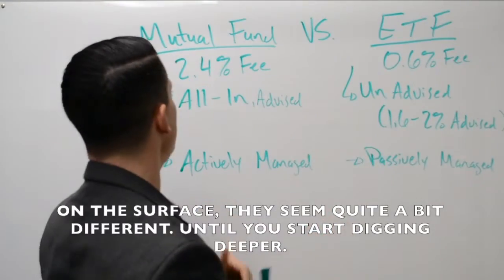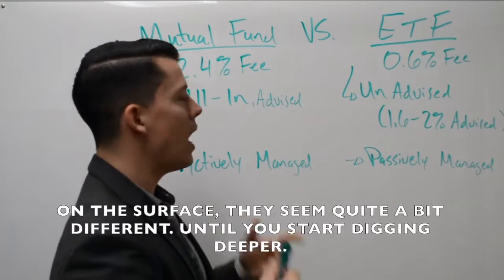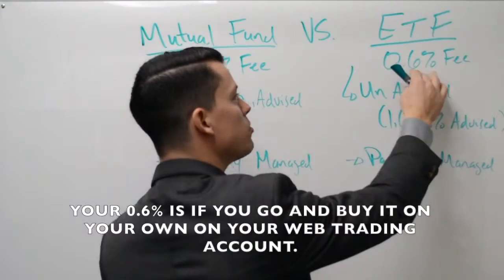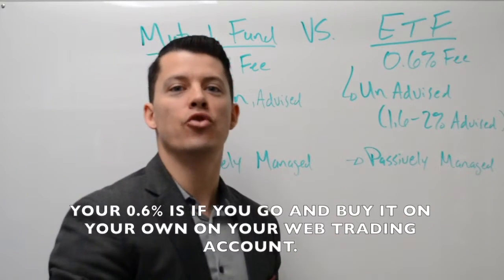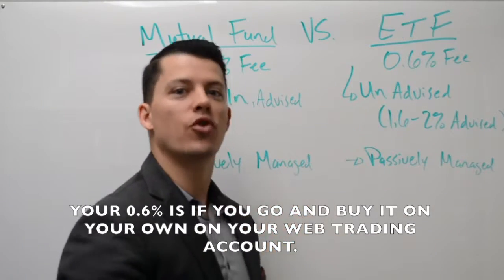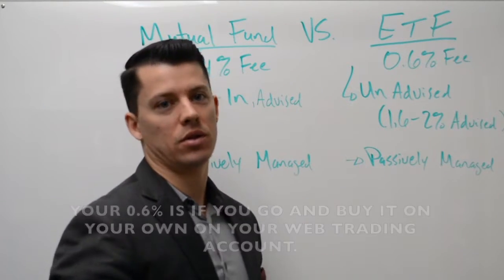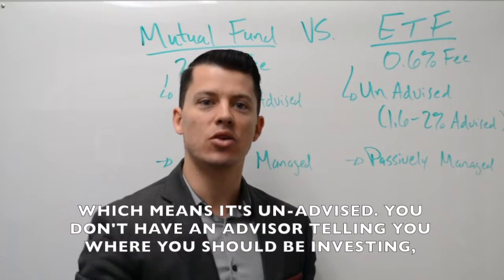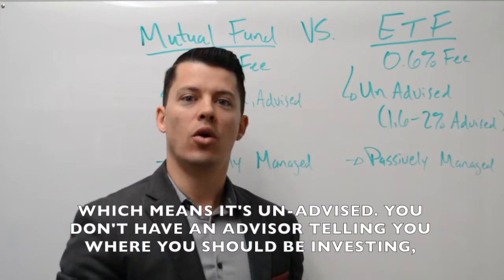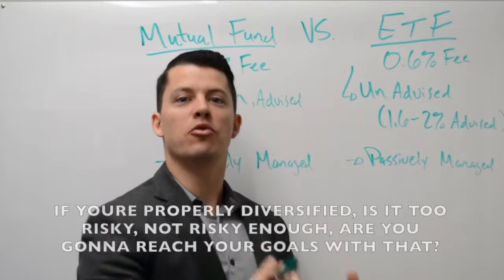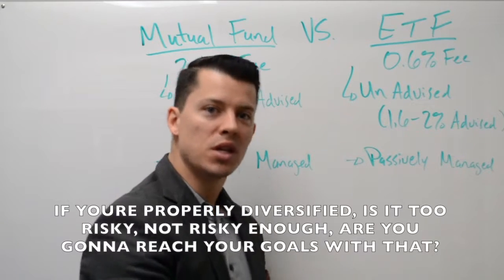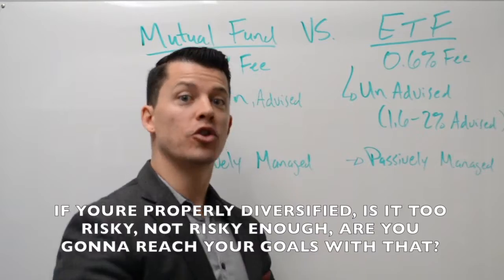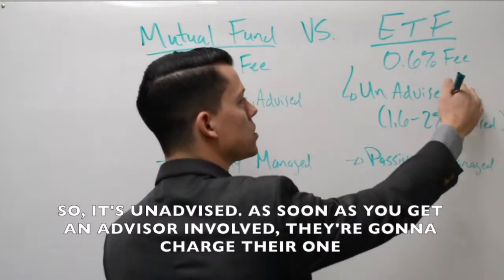On the surface they seem quite a bit different, until you start digging deeper. Your 0.6% is if you go and buy on your own on your web trading account, which means it's unadvised. You don't have an advisor telling you where you should be investing, if you're properly diversified, if it's too risky or not risky enough, or whether you're going to reach your goals. So it's unadvised.